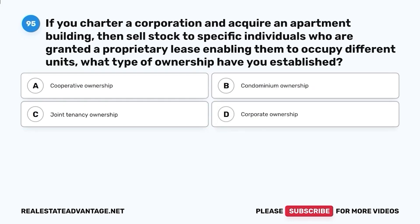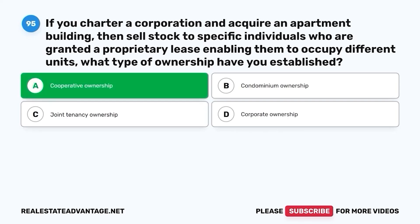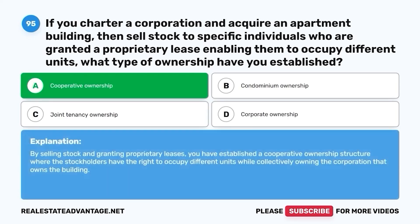Question 95. If you charter a corporation and acquire an apartment building, then sell stock to specific individuals who are granted a proprietary lease enabling them to occupy different units, what type of ownership have you established? The correct answer is A. Cooperative ownership. By selling stock and granting proprietary leases, you have established a cooperative ownership structure where the stockholders have the right to occupy different units while collectively owning the corporation that owns the building.